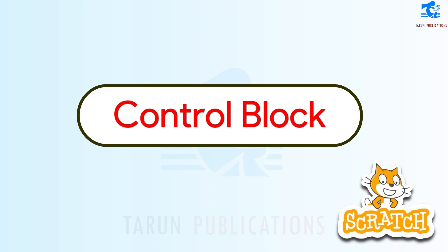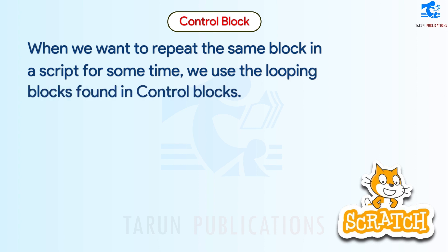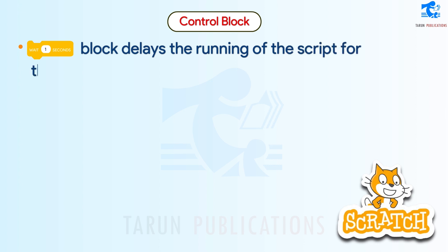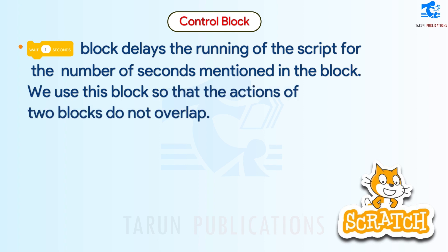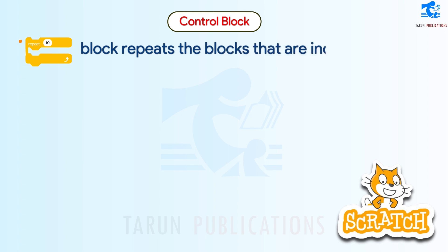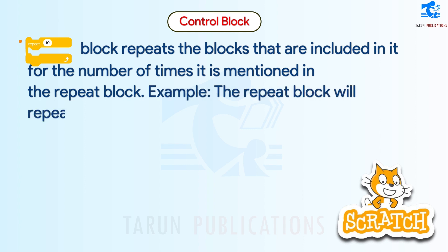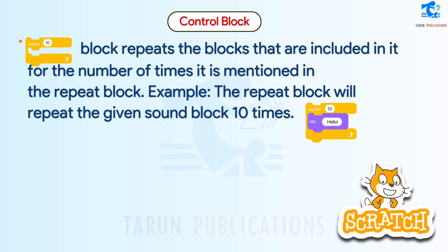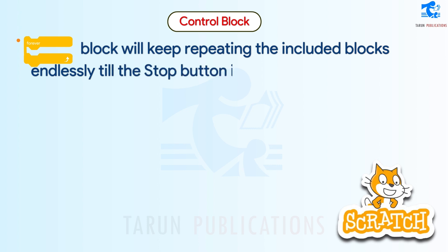Control blocks contain looping blocks, used when we want to repeat the same block in a script. One block delays the running of the script for the number of seconds mentioned, so that the actions of two blocks do not overlap. A repeat block repeats the included blocks for the number of times specified — for example, it will repeat a given sound block 10 times. Another block keeps repeating the included blocks endlessly until the stop button is clicked.